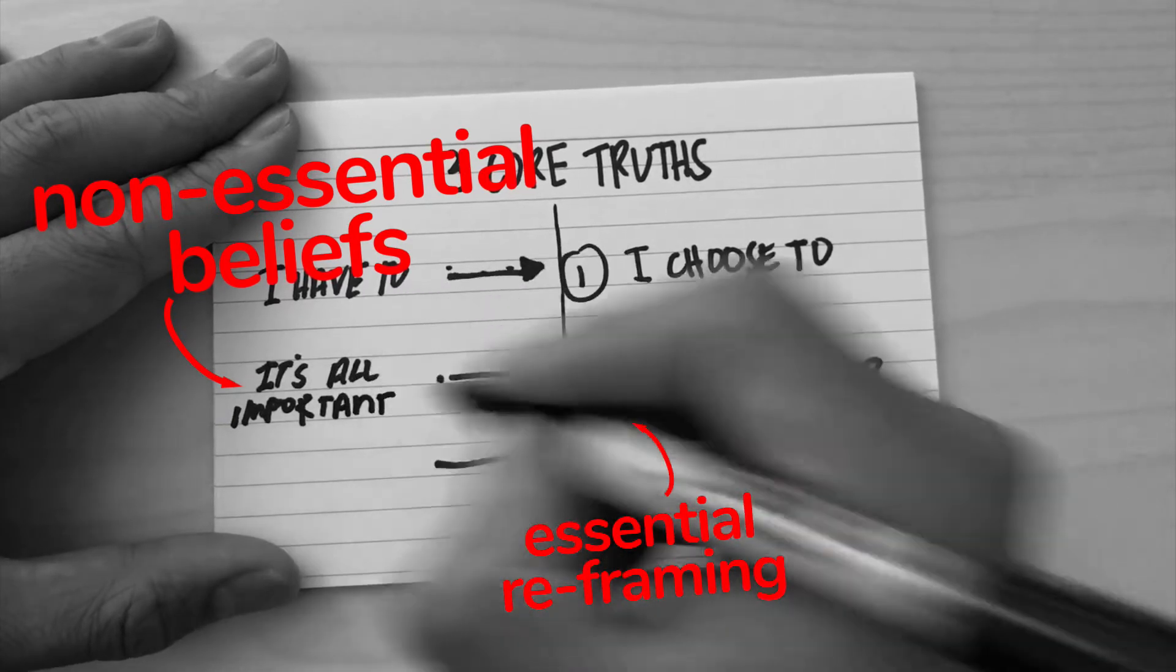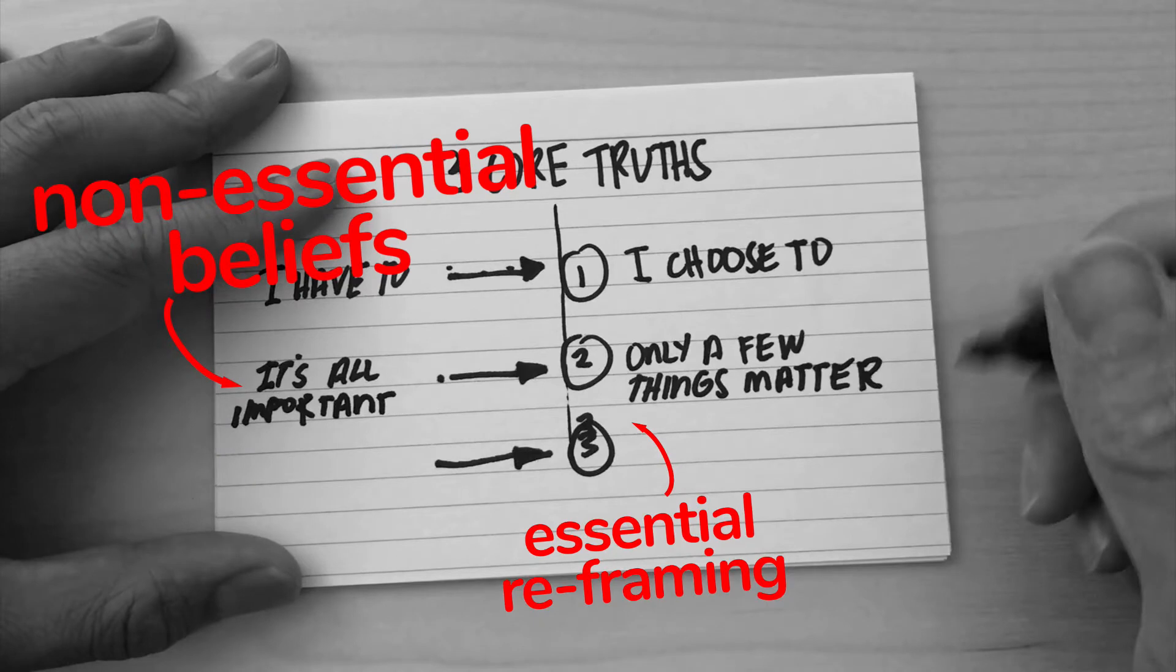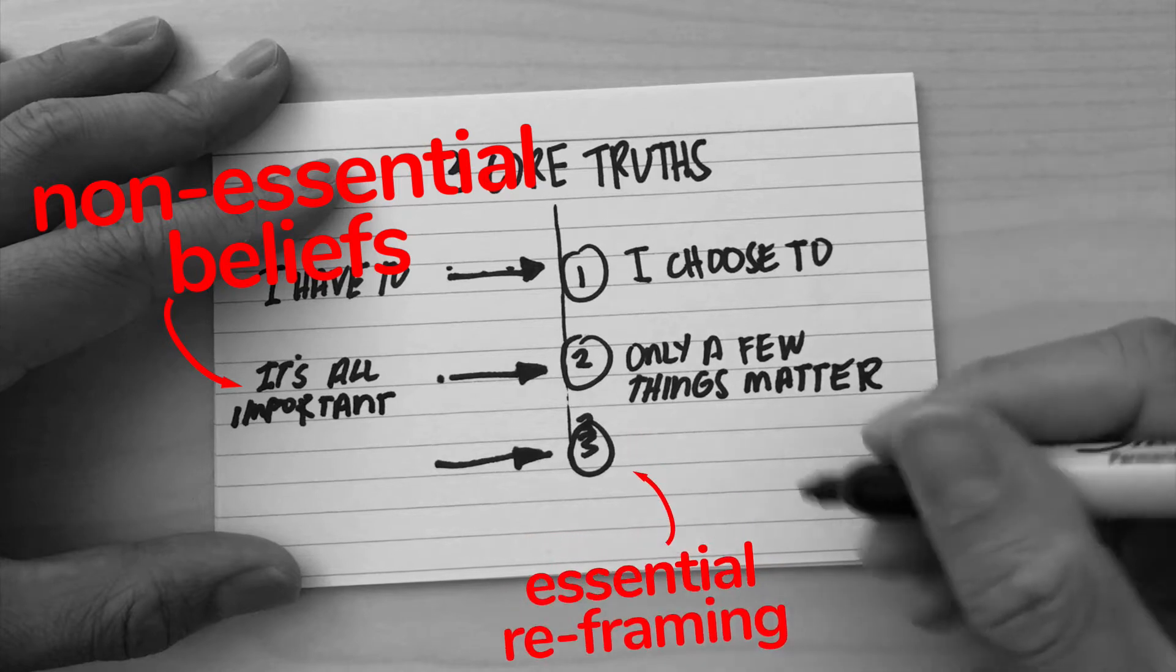But they can't all be important, or else none of them are important. And that's where you get to that idea that only a few things matter, and that's core to essentialism.